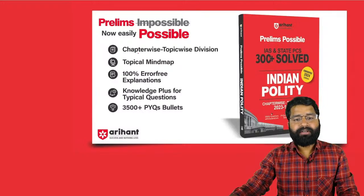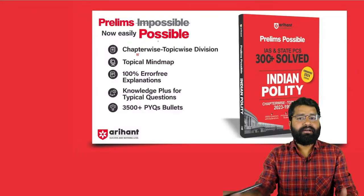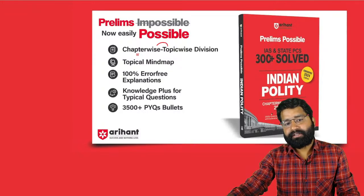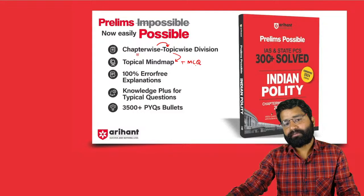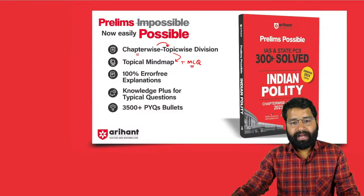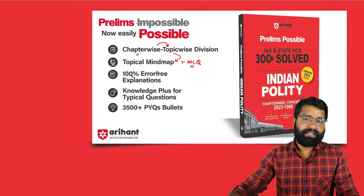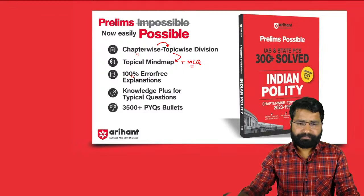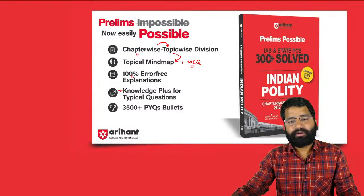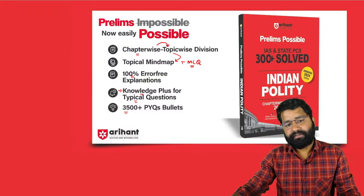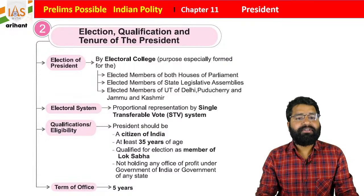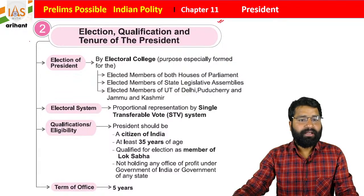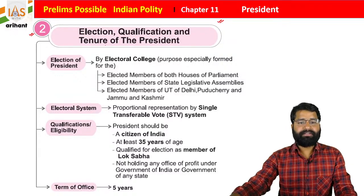This book contains lots of information and is divided into chapters, and each chapter is divided into topics. There is a topic-based mind map with each topic, along with MCQs previously asked in examinations, with detailed explanations for each question. There are also Knowledge Plus sections for typical questions and 3500+ PYQ bullets. In the morning we started with the topic on election, qualification, and tenure of the President — Topic 2 of the President of India chapter.